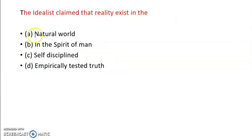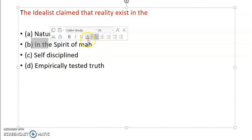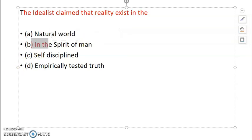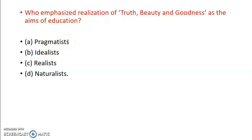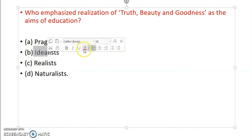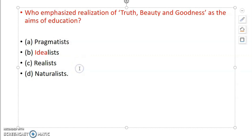The next question is: The idealist claims that reality exists in the natural world, in the spirit of man, self-discipline, empirical test is truth. So the answer is B. So here the idealist answer is truth, beauty and goodness. You should remember it - idealistic.